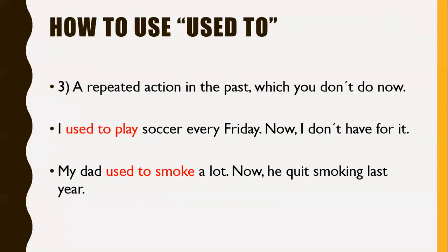Number three for 'used to': a repeated action in the past which you don't do now. For example: I used to play soccer every Friday, but now I don't have time for it; my dad used to smoke a lot, but he quit smoking last year. This is to contrast something that you did in the past but don't do anymore in the present — that's why you use 'used to'.